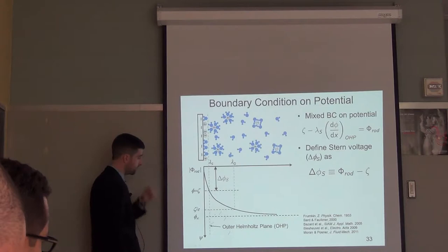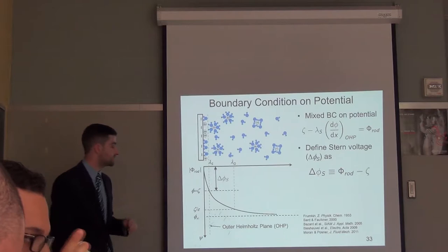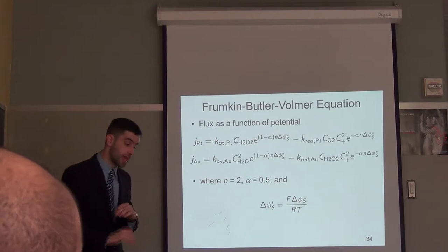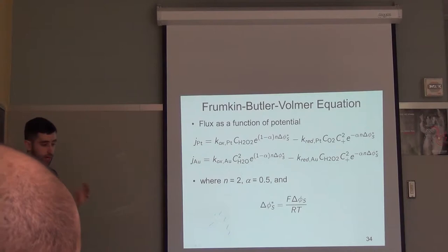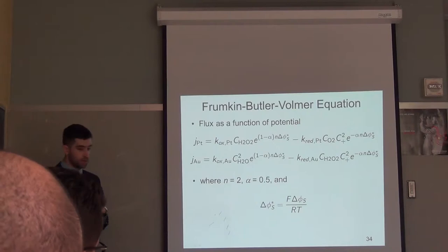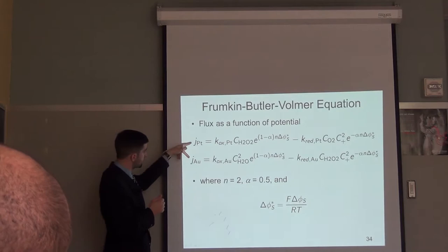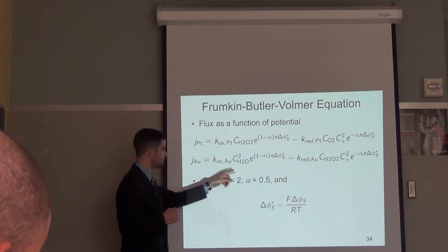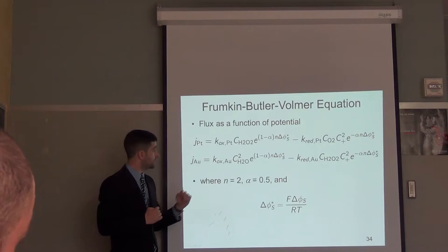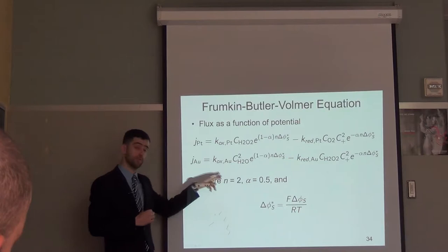For the reaction boundary conditions, the Butler-Volmer equation with Frumkin's correction should be used to describe the kinetics. The fluxes are now a function of rate constants k, concentrations of reactants, and the Stern voltage normalized by the thermal voltage. N is the number of electrons transferred, and alpha is a symmetry parameter typically set to one half.